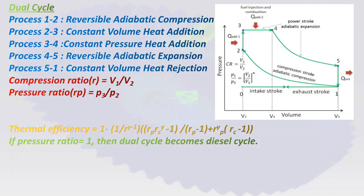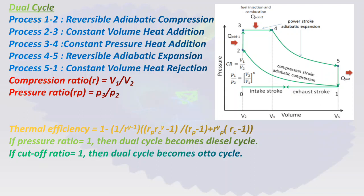If the pressure ratio equals 1, then the dual cycle becomes the diesel cycle — pressure ratio 1 means P3 equals P2, so the line 3 to 4 collapses to point 2 and we get the same cycle as the diesel cycle. If the cutoff ratio equals 1, then the dual cycle becomes the Otto cycle — cutoff ratio 1 means V3 equals V4, so point 4 coincides with point 3, and we get the same cycle as the Otto cycle.